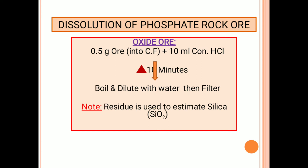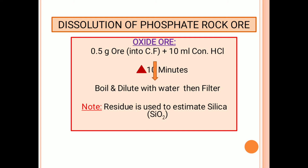If it is an oxide ore, you need to take 0.5 gram of ore into a conical flask, then add 10 ml of concentrated HCl and heat it for 10 minutes. Next, boil, then dilute with water, then filter. If residue is present, it is used for the estimation of silica in the phosphate rock ore.